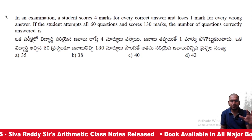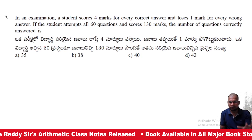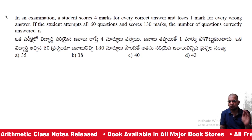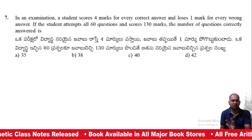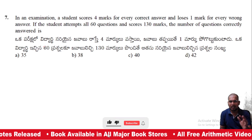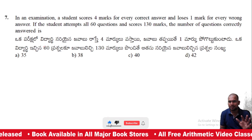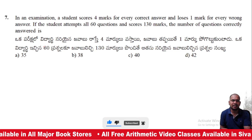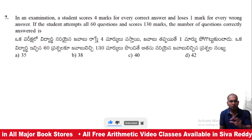In an examination, a student scores 4 marks for every correct answer and loses 1 mark for every wrong answer. If the student attempted all 60 questions and scored 130 marks, the number of questions correctly answered is what?